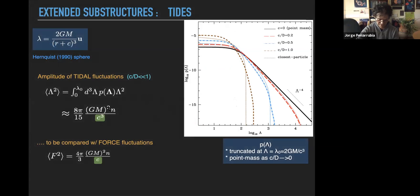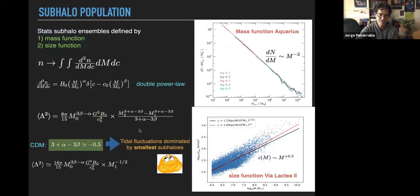Calculating the variance of the tidal forces gives an analytical equation very similar to the force variance, but instead of 1/size we have 1/size^3. This is very interesting because it shows that tidal forces are much more sensitive to small objects at fixed mass. And indeed, when you combine the mass and size functions, you get another power law, but the exponent is 3 + α - 3β, which is negative — meaning the variance is now dominated by the smallest subhalos, the truncation of the mass spectrum. This was really great news.